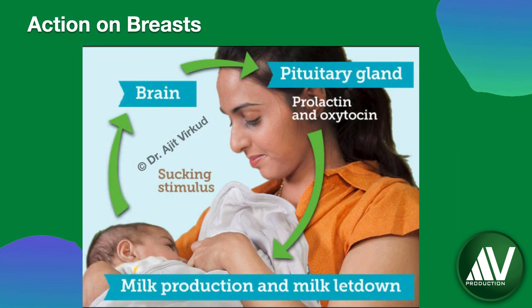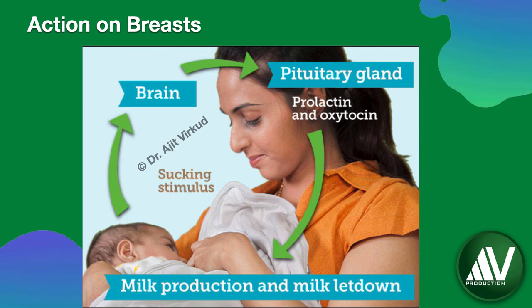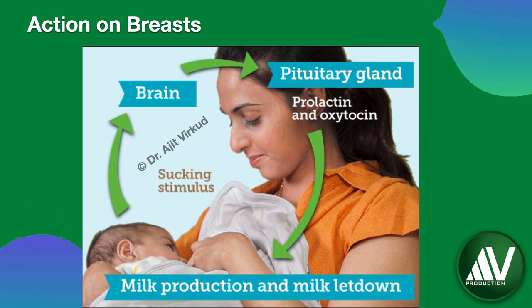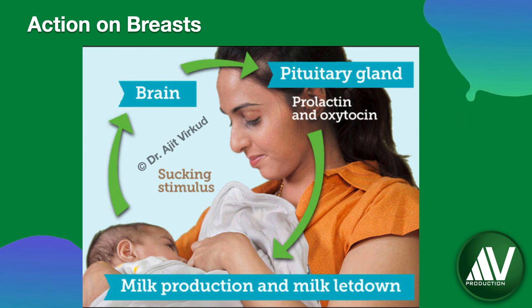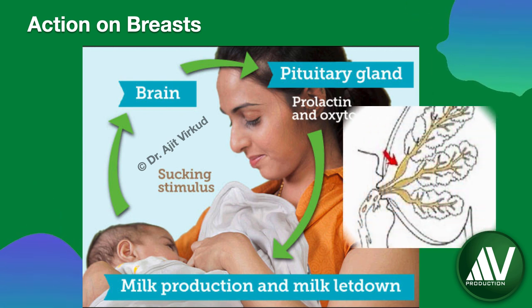Oxytocin is an important hormone for lactation because of its action on the breasts. It causes milk ejection by stimulating the myoepithelial cells of the mammary glands.